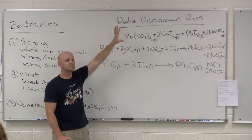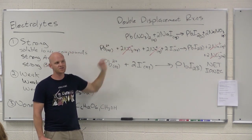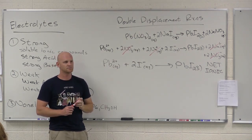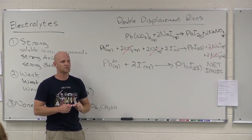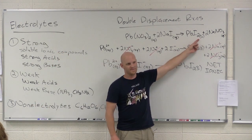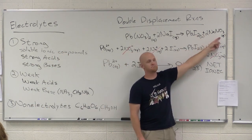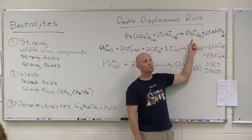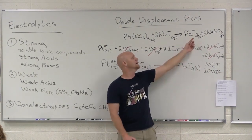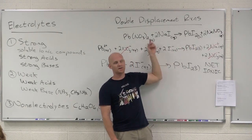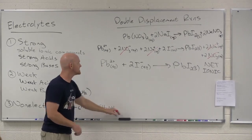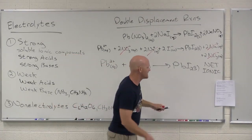In a double displacement reaction, the first type is a precipitation reaction. If a solid forms in a double displacement reaction, that is a precipitation reaction — that's exactly what we just did.